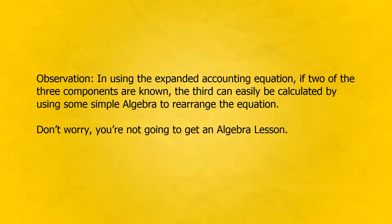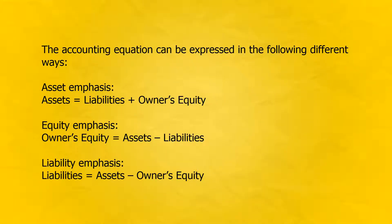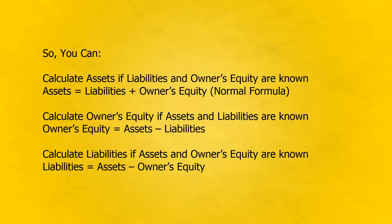Observation. In using the expanded accounting equation, if two of the three components are known, the third can easily be calculated using some simple algebra to rearrange the equation. Don't worry, you're not going to get an algebra lesson. The accounting equation can be expressed in the following different ways: Asset emphasis — assets equals liabilities plus owner's equity. Equity emphasis — owner's equity equals assets minus liabilities. Liability emphasis — liabilities equals assets minus owner's equity. So you can calculate assets if liabilities and owner's equity are known, calculate owner's equity if assets and liabilities are known, or calculate liabilities if assets and owner's equity are known.